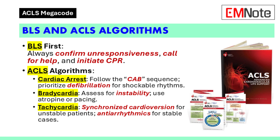In cases of bradycardia, assess for instability and use atropine or pacing as needed. For tachycardia, synchronized cardioversion is appropriate for unstable patients, while antiarrhythmic medications are used for stable cases.